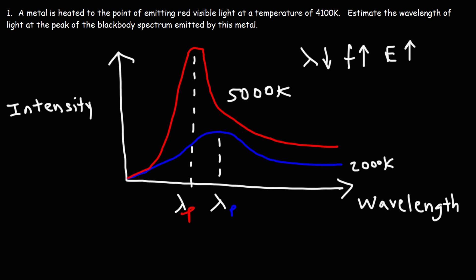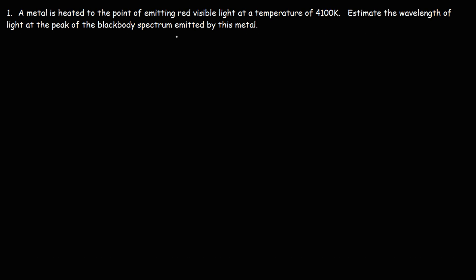Now, we could use a formula that's associated with Wien's law to calculate this wavelength at peak intensity. The wavelength at peak intensity multiplied by the Kelvin temperature is equal to a constant, and that's 0.0029 meters times Kelvin. This is associated with Wien's law. It describes the relationship between the wavelength at peak intensity and Kelvin temperature.